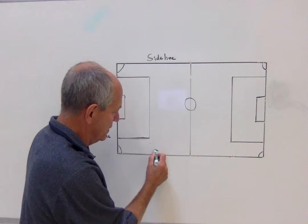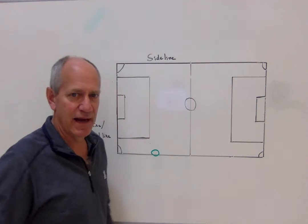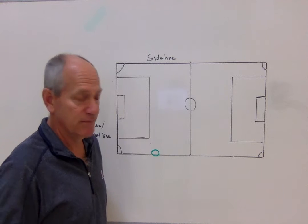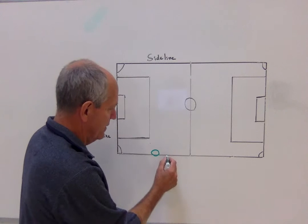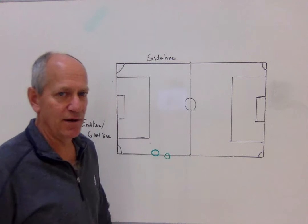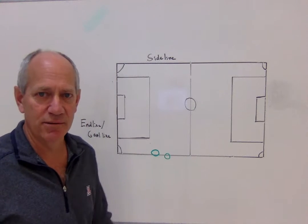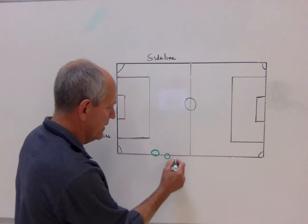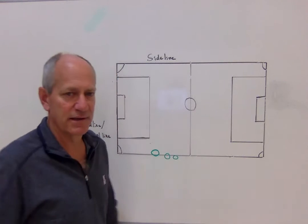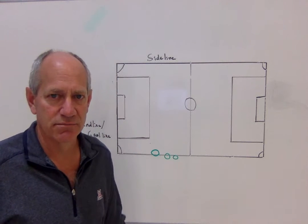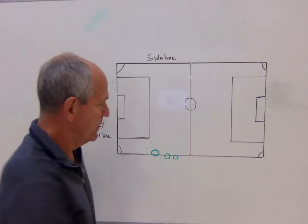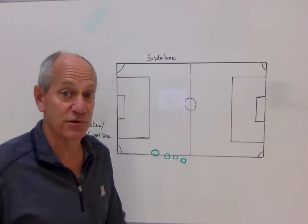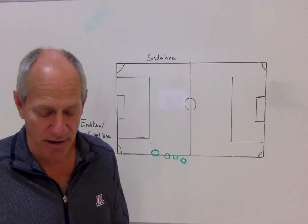If the ball is like this, is it out of bounds? Nope. If more than half of it is out of bounds, is it out of bounds? Nope. If it's barely touching it, is it out of bounds? Nope. The soccer ball has to be completely out of bounds in order to be out of bounds.